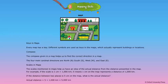Actual distance is equal to 5 into 1000 km, which is equal to 5000 km.